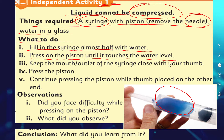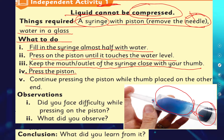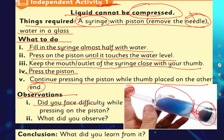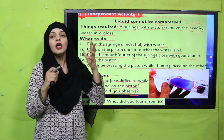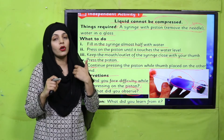Now it's time for independent activity number one, given in your Science 4 book, chapter number four: 'Liquid cannot be compressed.' Things required: a syringe with piston. Remove the needle — uski sui ko remove kar dein. Take water in a glass. Fill the syringe almost half with water. Press out the piston until it touches the water level. Keep the mouth outlet of the syringe closed with your thumb. Then press the piston from behind. What did you observe? Conclusion: jab aap piston ko move karenge aur aaghe se aapne usko roka hua hai, water bahar nahi nikal sakta — aapko press karne mein difficulty hogi, and this shows that water cannot be compressed.